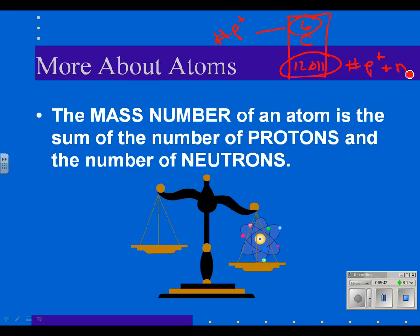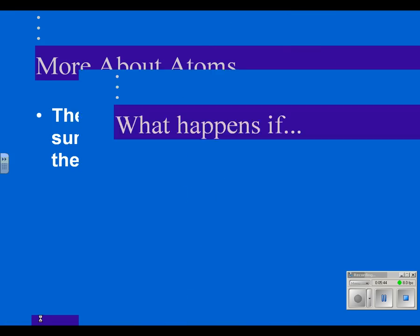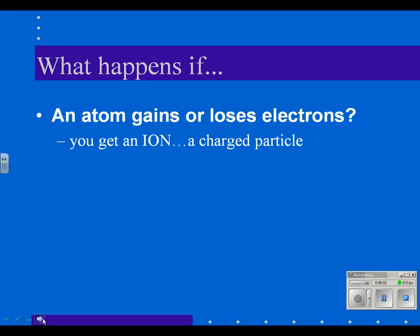So what happens if an atom gains or loses electrons? Because remember, the definition is defined by its atomic number, which is the number of protons. So what happens if it gains or loses electrons? Well, then we call it an ion. We will be talking about ions quite a bit in here, because when we talk about elements you're made of, many elements inside of a human are in ionic form and they're used as ions. The charge is used.